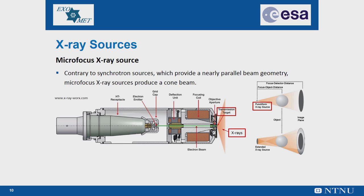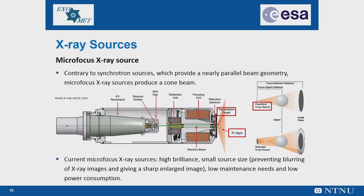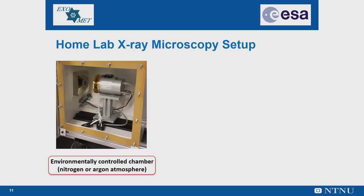Current micro-focus X-ray sources guarantee high brilliance, small source size, low maintenance needs, and low power consumption. This is the X-ray home laboratory setup currently in use at the Norwegian University of Science and Technology. An environmentally controlled chamber has been designed to perform experiments under nitrogen and argon atmosphere, allowing delayed oxidation of the samples, which lasts much longer than in an oxygen atmosphere. The micro-focus X-ray source is equipped with a thin layer of molybdenum as a transmission target. Molybdenum was selected because the most prominent energy in its X-ray emission spectrum offers high contrast when copper-containing aluminum alloys are used.